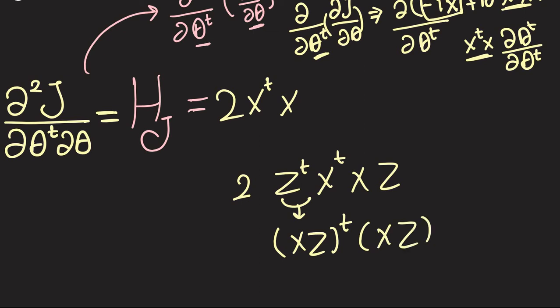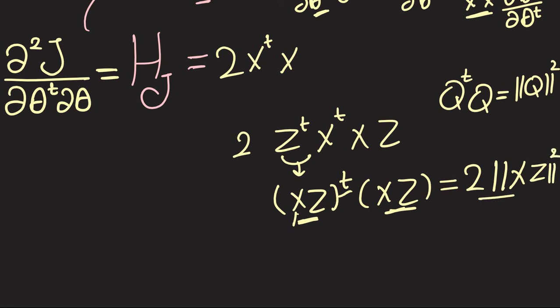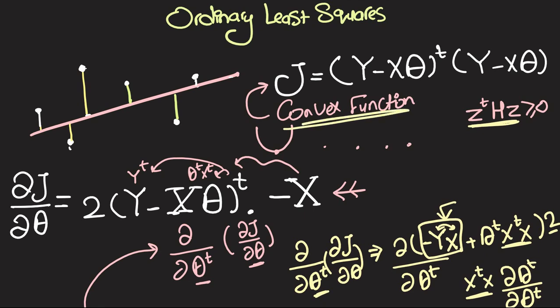And then let me make this into (XZ)^T multiplied by XZ. And then let's recognize that this is a vector - you have a matrix multiplied by a vector which is going to give you a vector. Having that transpose and having that vector, remember the last video when we did Q^T Q giving us the magnitude of Q squared. So this is going to give us 2 multiplied by ||XZ||² squared.